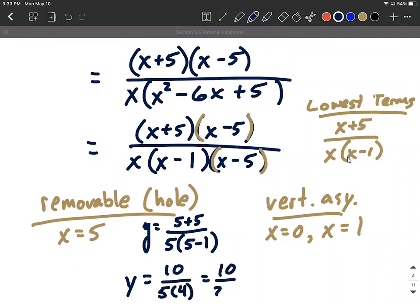or 10 20th, which will be one half. So we have the ordered pair 5 comma one half. If we were to graph this, that would be a hole in the graph. Everything else would be the exact same except for this will get a little hole in our graph at that place.